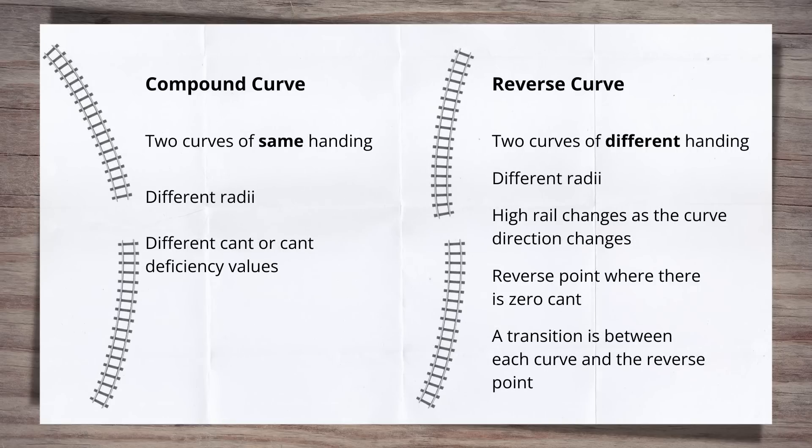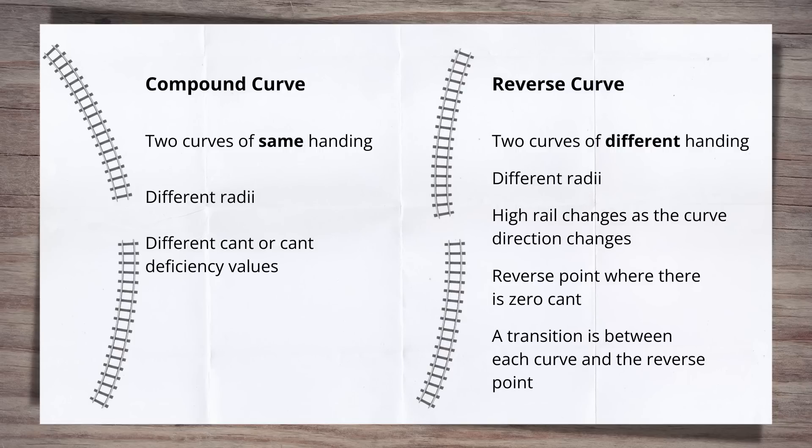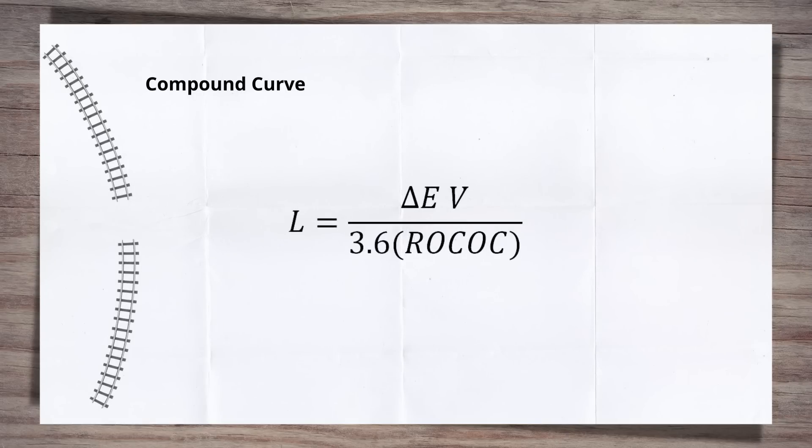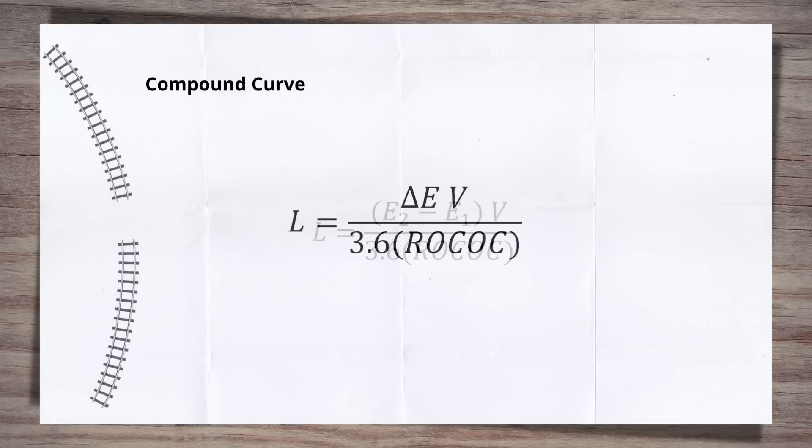Let's go back to the compound curve first. The main difference we have between a compound curve and the straight to curve example we looked at earlier is where the straight had no cant, the curve is likely to have cant applied. So let's take our equation. In this instance, the rate of change of cant equation. In the prior example, the change in cant, delta e, was the cant value of the curve. This is because the straight had zero cant. Now we need to work out our change in cant between the two curves. So delta e becomes e2 minus e1, where e2 and e1 are the cant on each curve. This is the same for delta d in our other equation, so relatively simple.